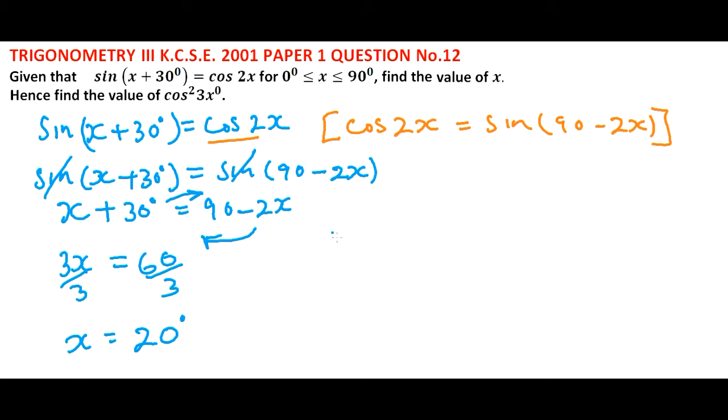If x is equals to 20 degrees, then sine 20 plus 30 is sine 50. The other value for sine 50 is sine 130, so it means sine x plus 30 is the same as sine 130 degrees. So we have x plus 30 is equal to 130, x is equal to 100 degrees.